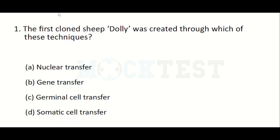The first cloned sheep Dolly was created through which of these techniques? Option A: nuclear transfer. Option B: gene transfer.